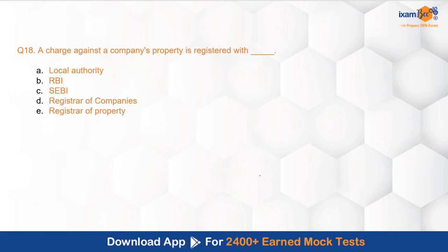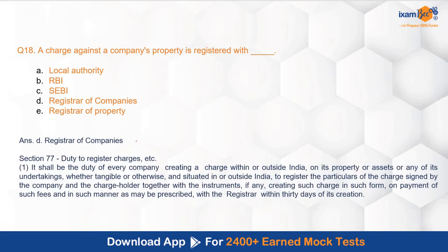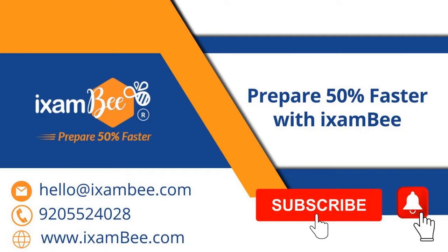The next question asks: a charge against a company's property is registered with which authority? You can see the various options displayed on the screen. The correct option is D — Registrar of Companies (ROC). Section 77 deals with the duty to register charges, and subsection 1 states that a charge against a company's property is required to be registered with the ROC.